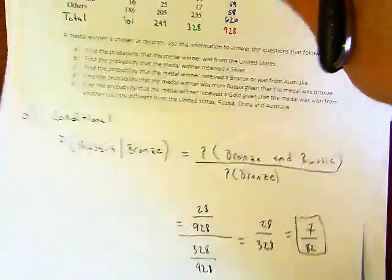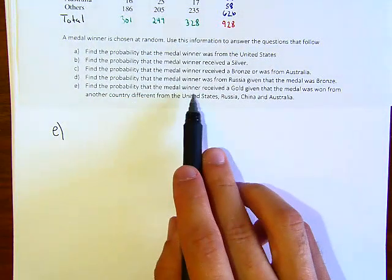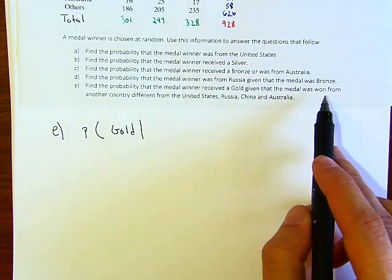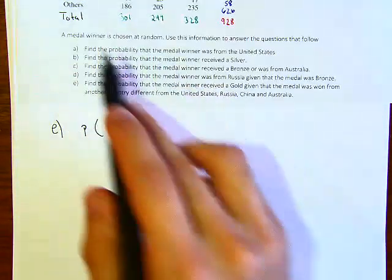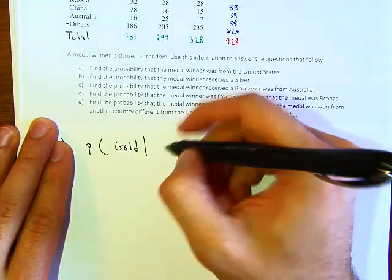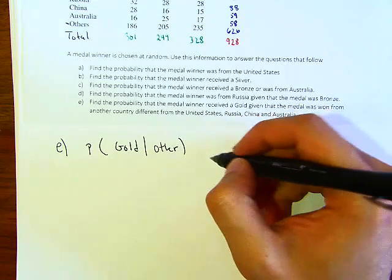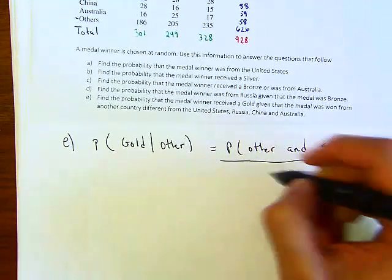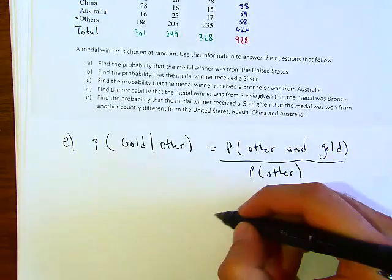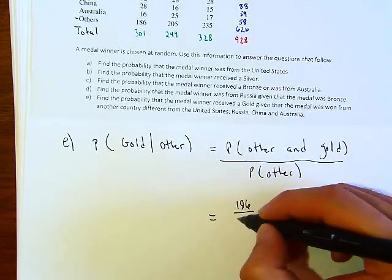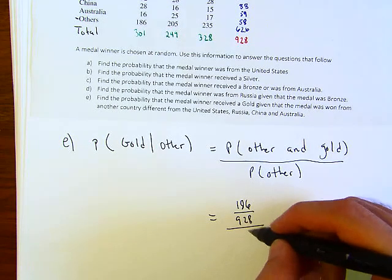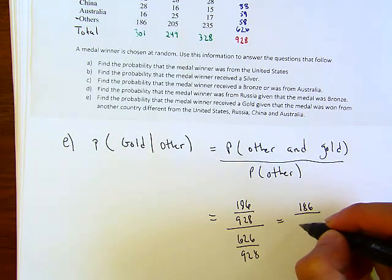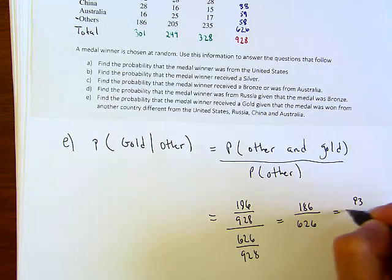Letter E, the last one, says: find the probability that the winner received a gold, given that it was from another country not on the list — the others. The probability of gold given other equals the probability of other and gold, over the probability of other. That is 186 over 928 divided by 626 over 928, which equals 186 over 626, or 93 over 313.